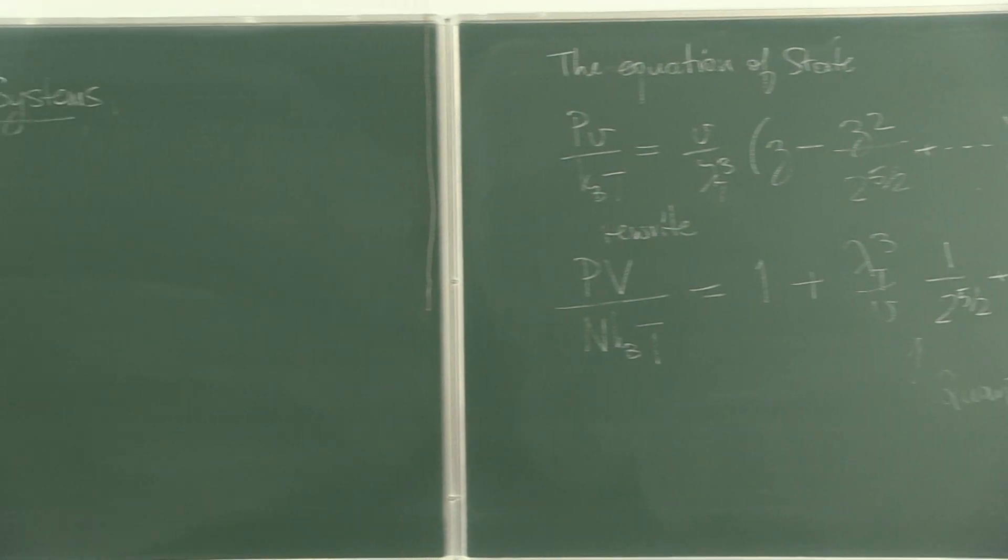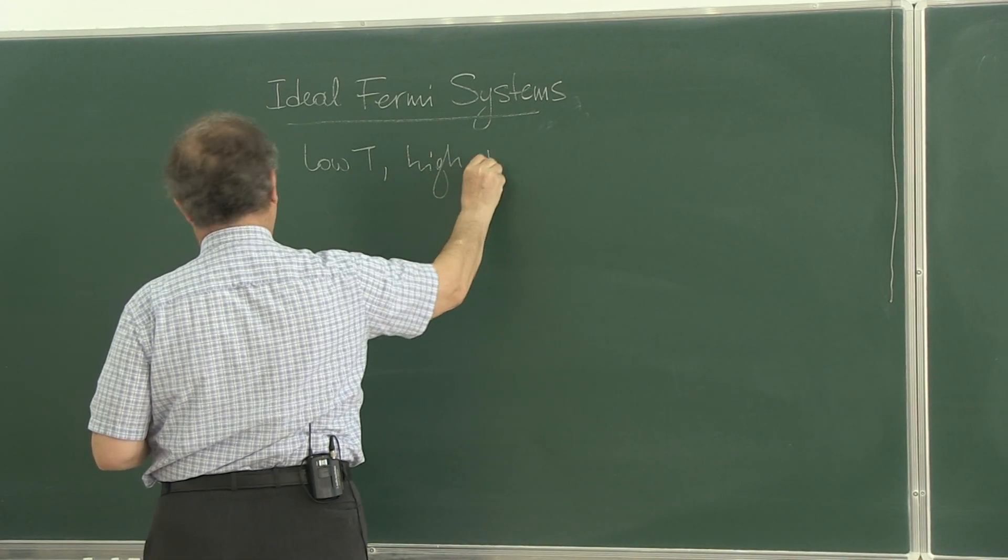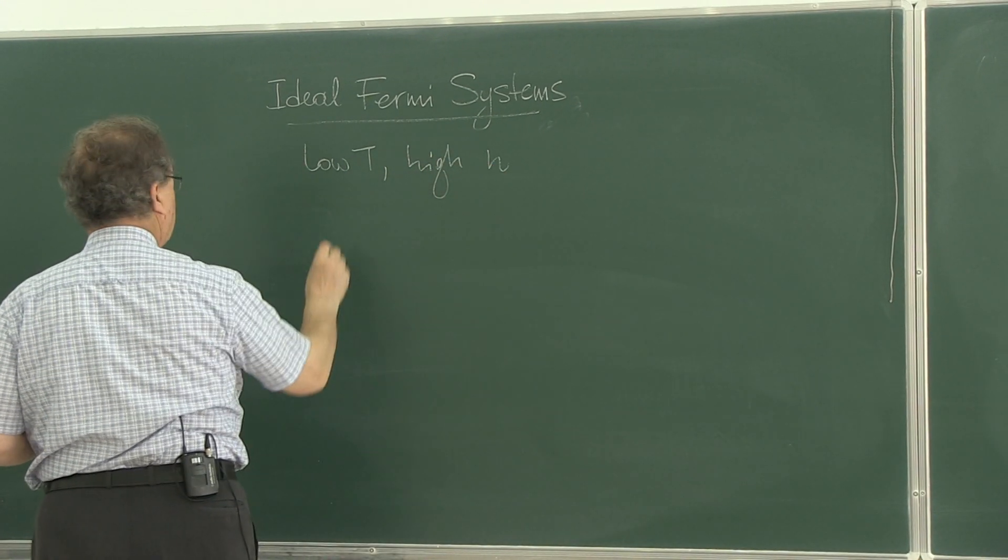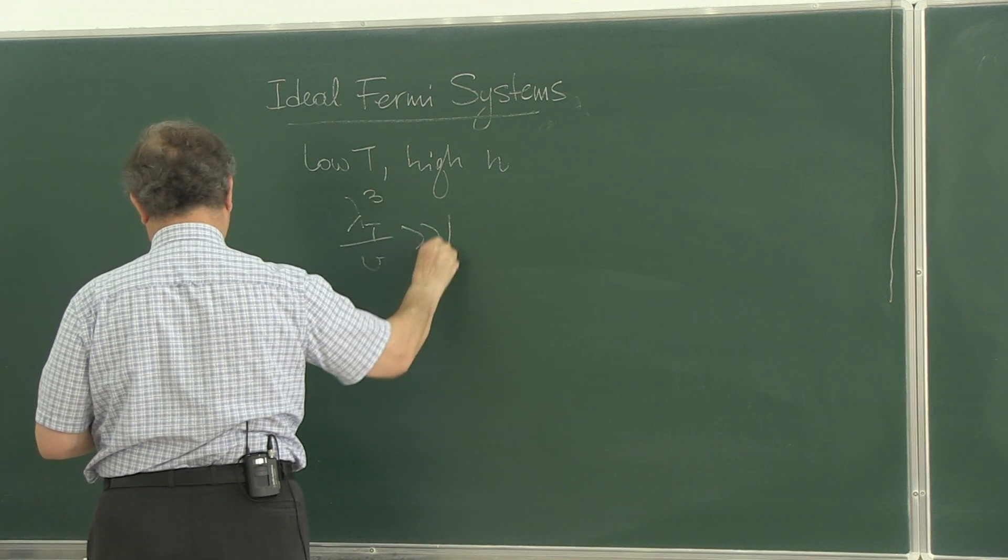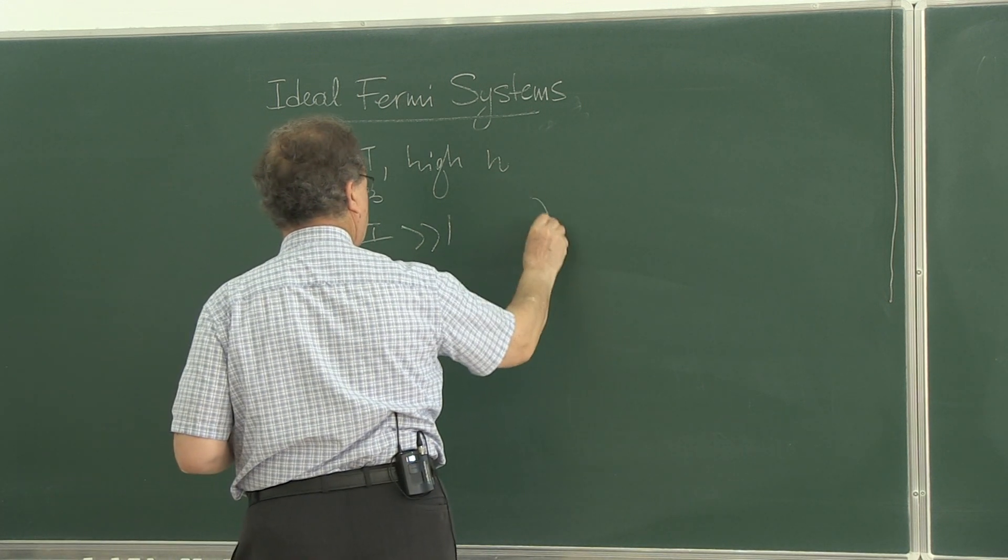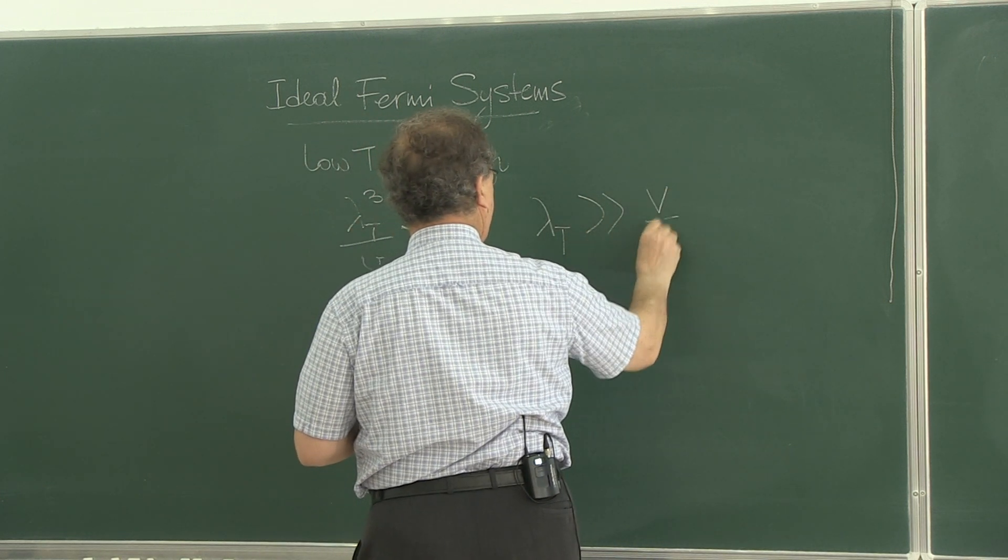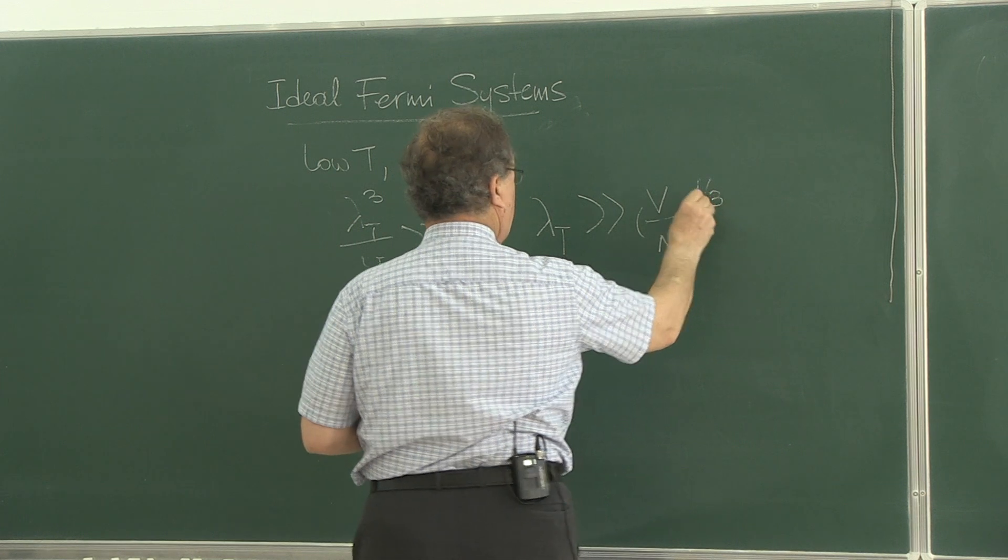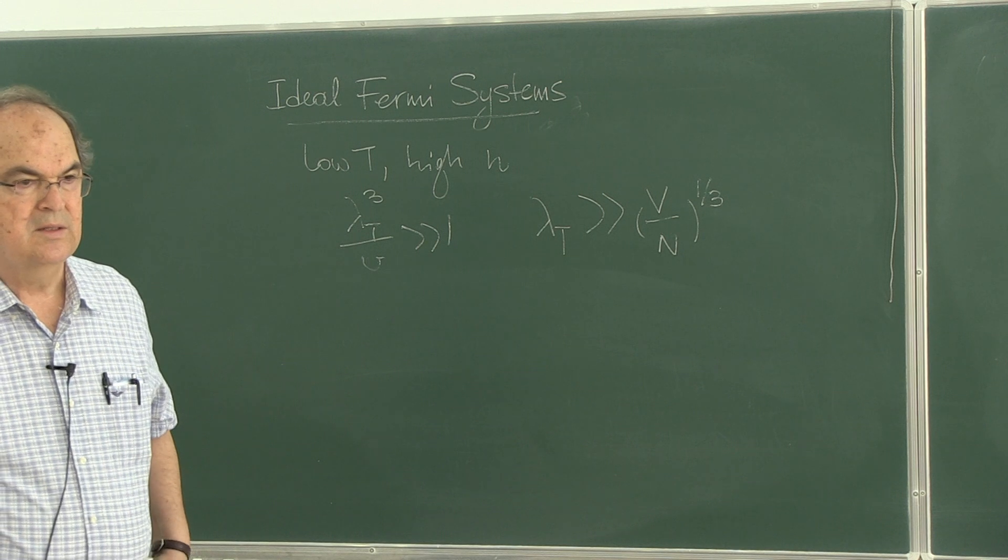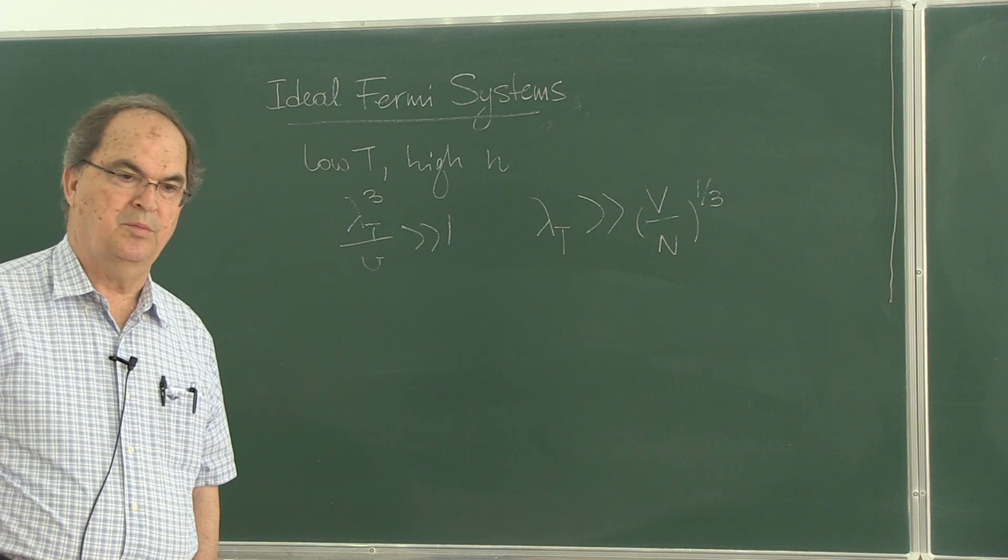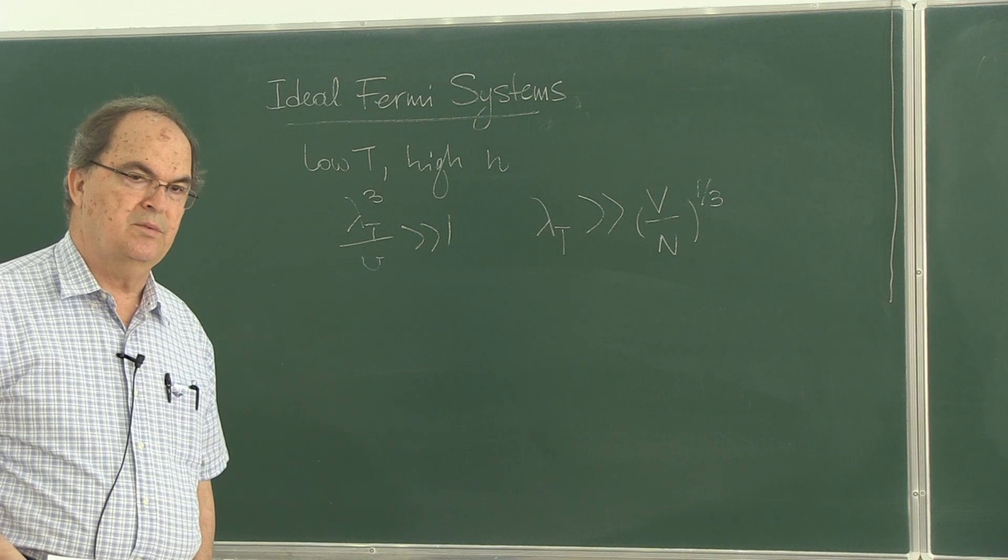Low temperatures, high densities. So that in this limit, the opposite happens. This is very large. That means also lambda t is very much greater than v over n to the power one third. So inter-particle distance is small compared to thermal wavelength. When thermal wavelength becomes large, you have the quantum limit.